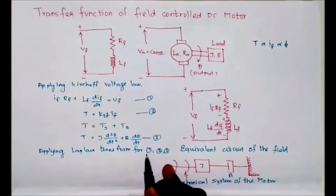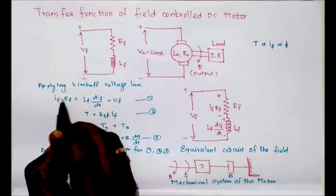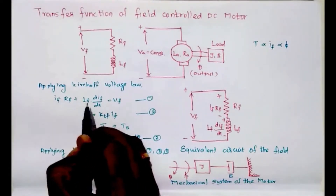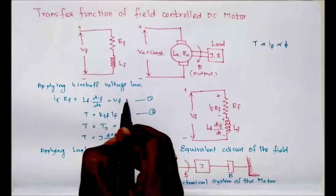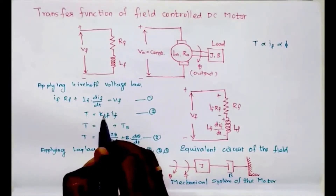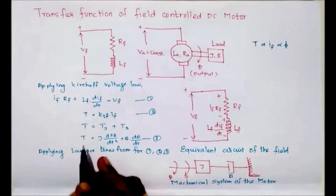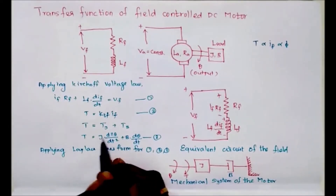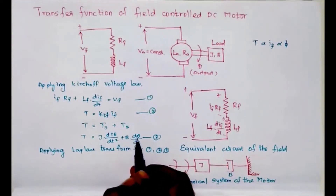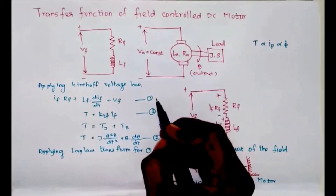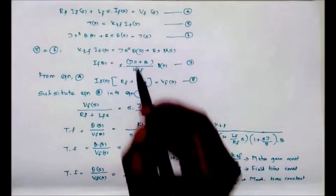We now apply the Laplace transform to equations one, two, and three. Applying the Laplace transform: Rf·If(S) + Lf·S·If(S) = Vf(S). Then T(S) = Ktf·If(S), where Ktf is constant. For the mechanical equation: T(S) = J·S²·θ(S) + B·S·θ(S). After taking the Laplace transform of all three equations, we obtain these three transformed equations.